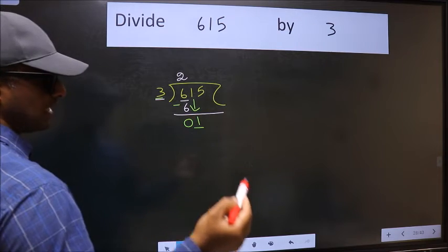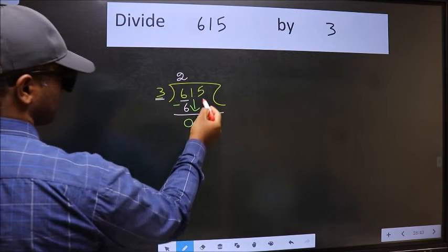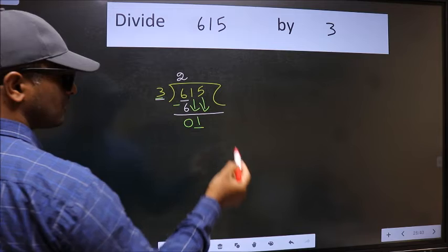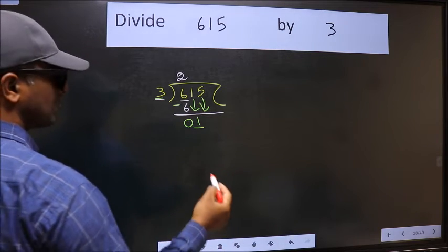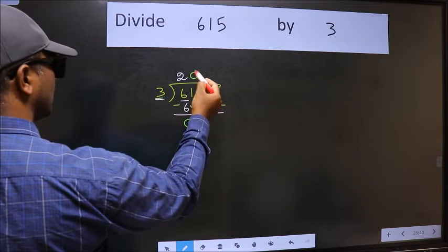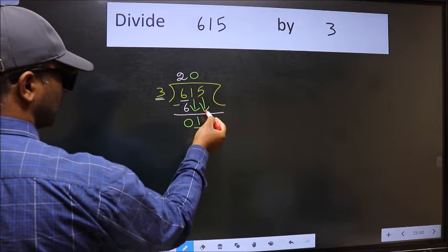So we should bring down the second number. And the rule to bring down the second number is we should put 0 here. Then only we can bring down this number.